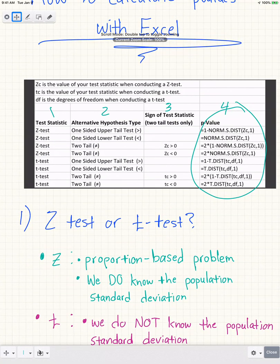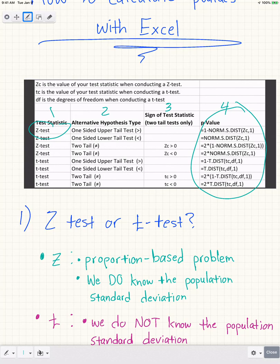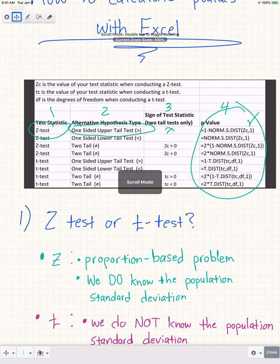At that point, you drill down to the p-value. For instance, let's talk about the first one here. If I had a Z test that was a one-sided upper-tail test, I don't have to worry about the sign because it's not relevant for a one-tail test. Then I use: =1-NORM.S.DIST(zc,1), where zc is the Z critical value that you calculated below.